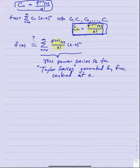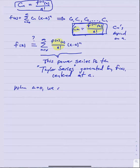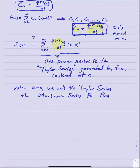Notice that these c sub n's depend on a. Therefore if we recenter this power series at a different center, the coefficients change every time, giving a new and different power series each time we shift the center. When a equals zero, we call the Taylor series the Maclaurin series — it's just a special name for the Taylor series for a function centered at x equals zero.